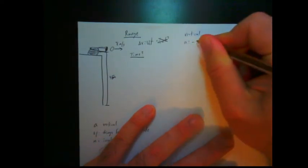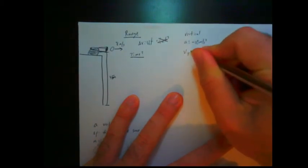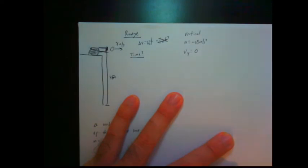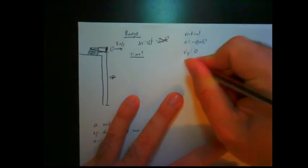So let's list our vertical givens. Vertical acceleration is 10 meters per second squared. Vertical initial velocity is 0, right? Because it was fired horizontally, none of that velocity is going in the vertical direction. And the vertical displacement is negative 45 meters.